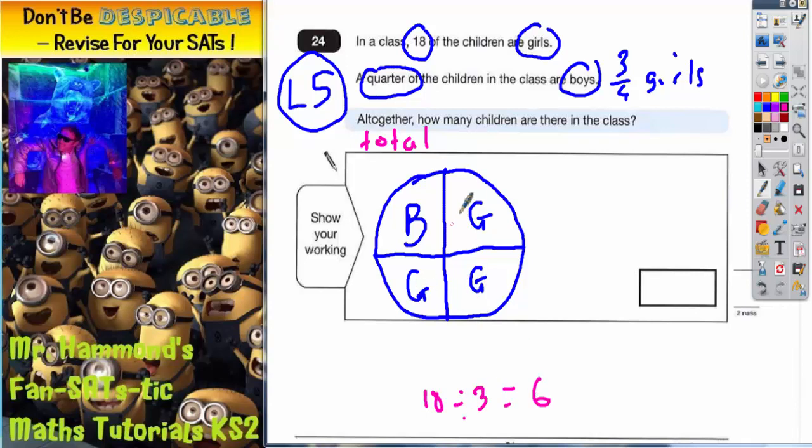So that must mean each of these sections for girls is worth six: six, six, and six again. So each quarter is worth six. Hang on a minute—all quarters must be the same size. So each quarter is worth six. That means the boys quarter must also be worth six, and now we've accounted for the whole class.